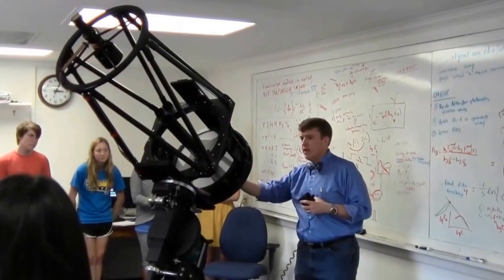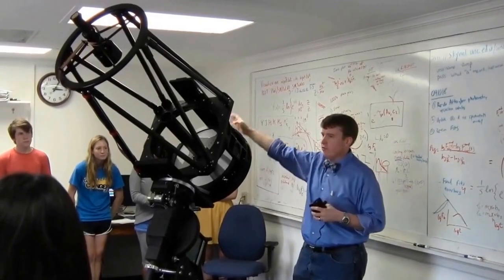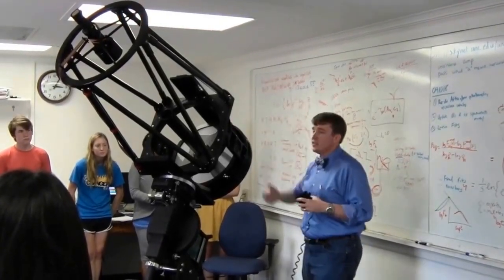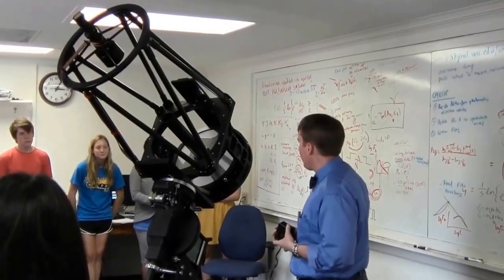On the back, we put our instrumentation - our filter wheels and cameras. Right now there's nothing back here because the ceiling is not a very interesting thing to take photographs of, so we haven't bothered putting the instruments on.